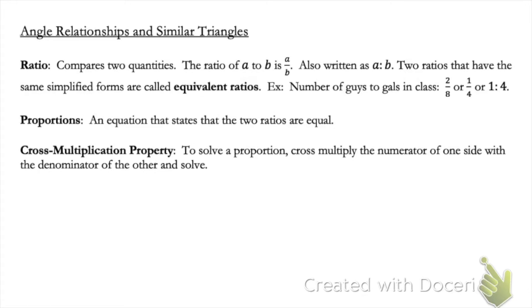Proportions. An equation that states the two ratios are equal. So pretty much you've got two ratios, you set them equal. How do we solve it, you ask? Well we use cross multiplication. To solve a proportion, cross multiply the numerator of one side with the denominator of the other side, and again, the numerator of the other side, denominator of the other side.